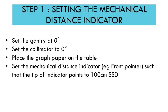Let's go through the step-by-step procedure. Step 1: set the gantry to 0 degrees, set the collimator to 0 degrees, place the graph paper on the table, and set the mechanical distance indicator — the front pointer — such that the tip of the indicator points to 100 cm SSD.